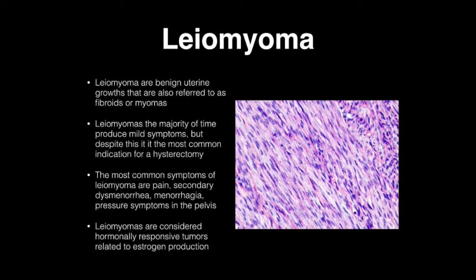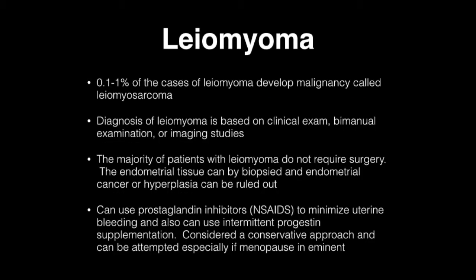Leiomyomas are benign uterine growths, also referred to as fibroids or myomas. The majority of the time they produce mild symptoms, but they are the most common indication for hysterectomy. The most common symptoms are pelvic pain secondary to dysmenorrhea, menorrhagia, and pressure symptoms in the pelvis. Leiomyomas are considered hormonally sensitive tumors related to estrogen production. 0.1% of leiomyomas develop malignancy called leiomyosarcoma.